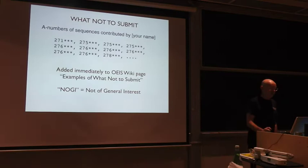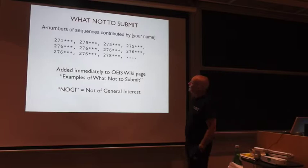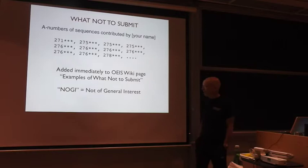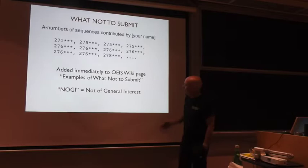And then here's another one. This was a sequence that somebody submitted, the sequence numbers of the sequence that was submitted. So this immediately got classified as NOGI, not of general interest. It was put on the list, on the wiki, of examples of what not to submit.